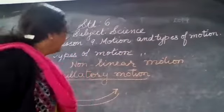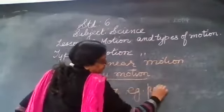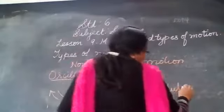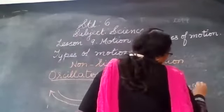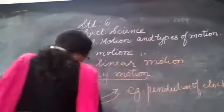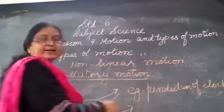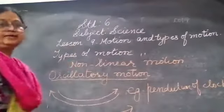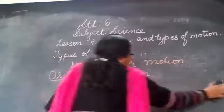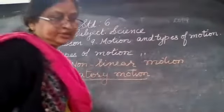You have seen oscillatory motion in the pendulum of a clock. When the pendulum of a clock moves, it moves to and fro — towards one side and again back. Such type of motion is known as oscillatory motion.